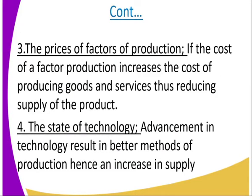Number three is the prices of factors of production. If the cost of factors of production increases, the cost of producing goods and services increases, thus reducing the supply of that commodity. When the production cost of a commodity increases, its production will be low and decreased. Producers are going to be forced to produce very few products, resulting in a reduction in supply.